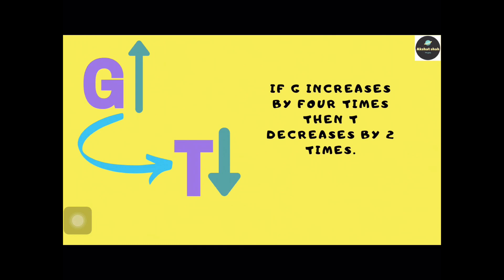There is a ratio by which this increase and decrease are related. If g increases by a certain number, then T decreases by the square root of that number. Or if g decreases by a certain number, then T increases by the square root of that number.